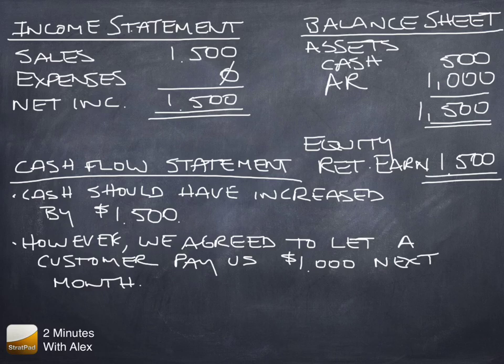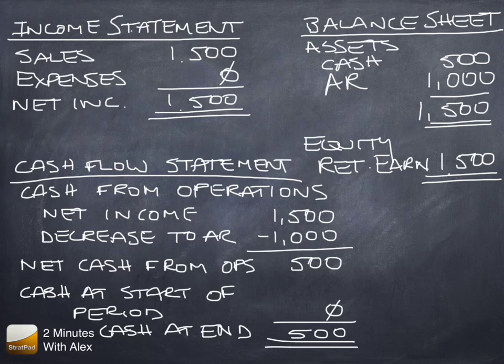Now let me keep going and rewrite the cash flow statement in a way that's more formal. Here's how the cash flow statement actually looks. The chapter heading cash from operations, net income should increase cash by $1,500, but it decreased because it went to accounts receivable. There's a minus $1,000. Therefore, the net cash from operations is $500.